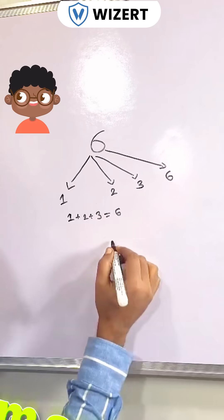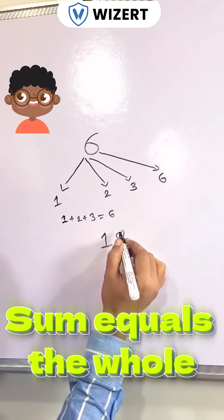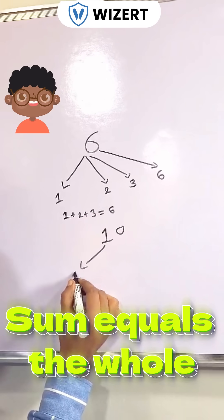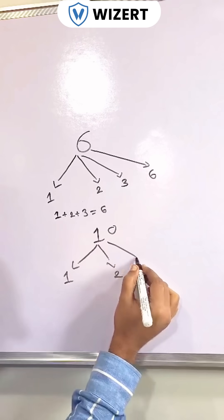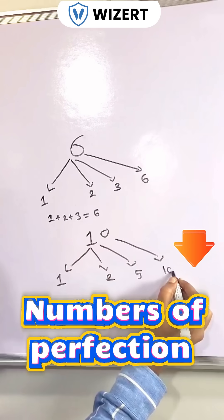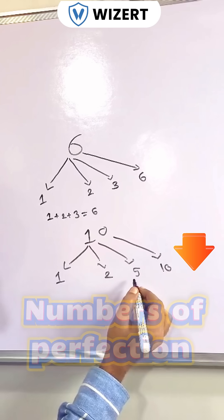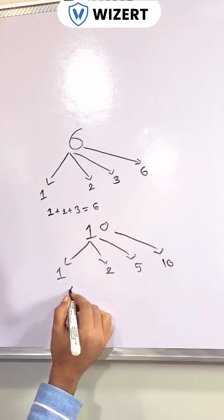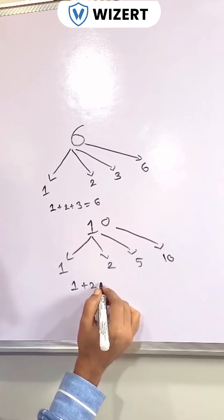What are the factors of ten? One, two, five, and ten. Now if we can add the factors excluding the number itself, we will get one plus two plus five equals eight.